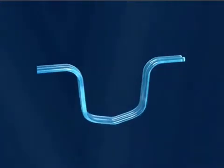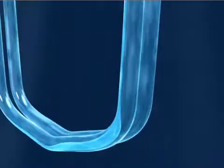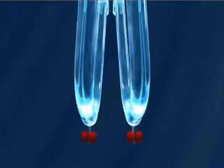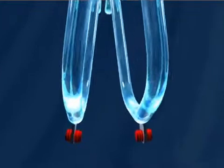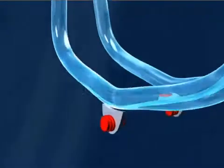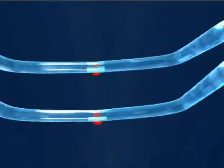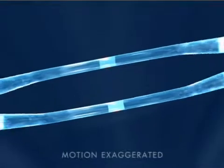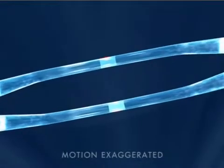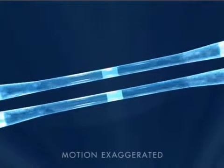For practical exploitation of this principle, it is sufficient for the two measuring tubes to perform oscillations on a small section of a circular path. This is achieved by exciting the measuring tubes with an electromagnetic exciter in its first resonance frequency. When no mass is flowing, the two tubes oscillate symmetrically.